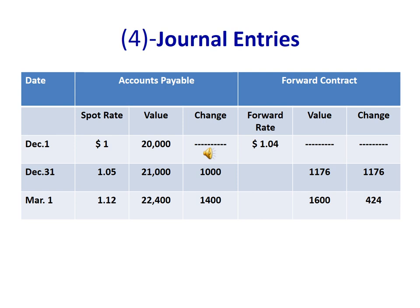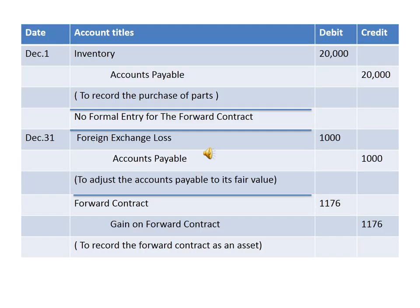While the forward contract achieved some gains — $1,176 on December 31 and $424 on March 1st — now we will record these transactions. On December 1st, the company purchased the parts from a foreign supplier, so we need to record this purchase: Inventory will be debited and accounts payable will be credited. There is no formal entry for the forward contract on December 1st.